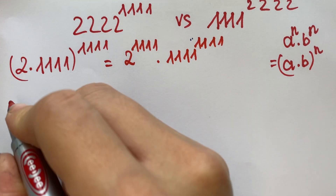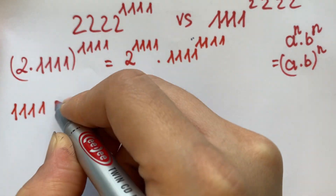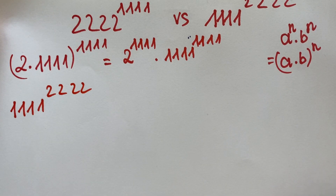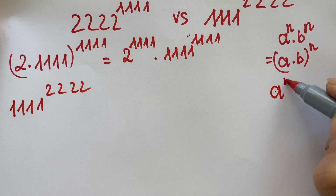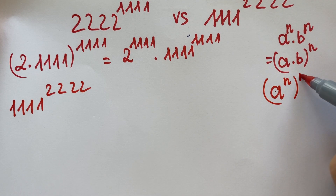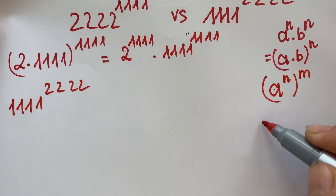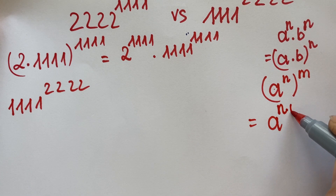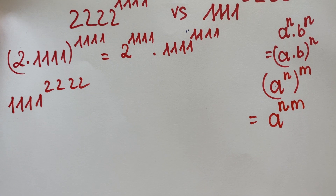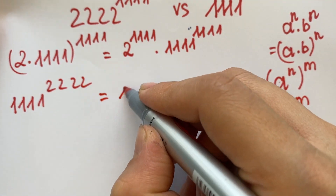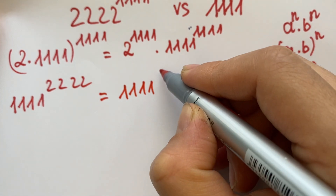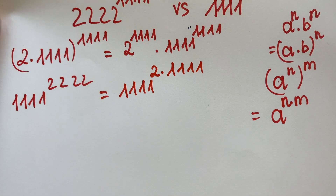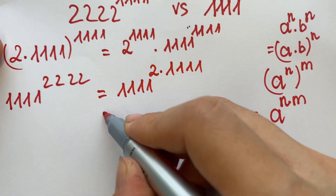Now for 1111^2222, we use the power rule: a^(n times m) equals (a^n)^m. So 1111^2222 equals 1111^(2 times 1111).